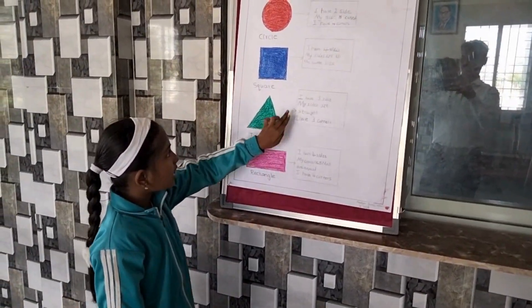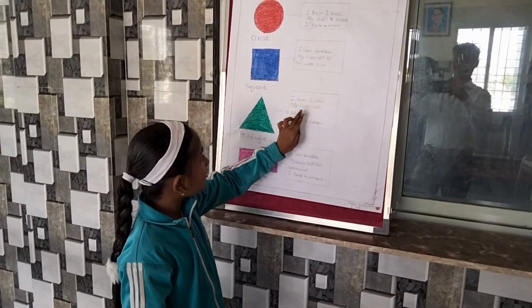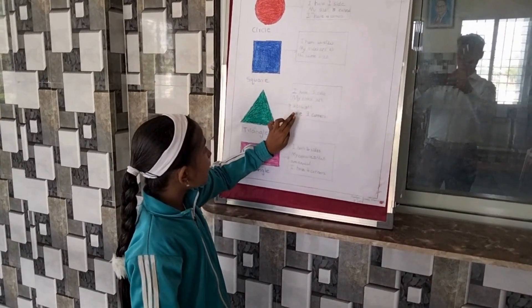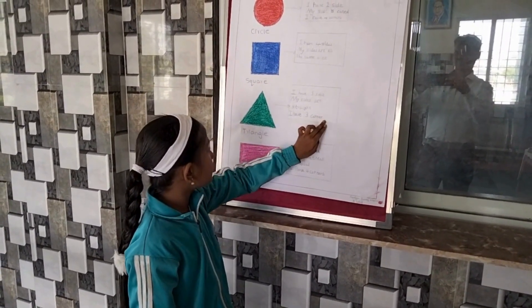Triangle. I have three sides. My sides are straight. I have three corners.